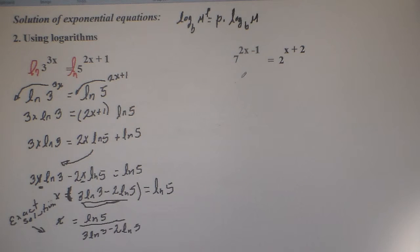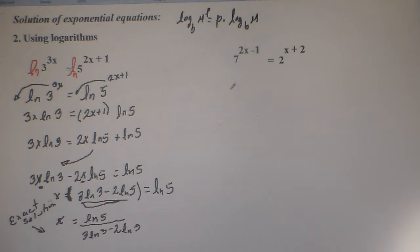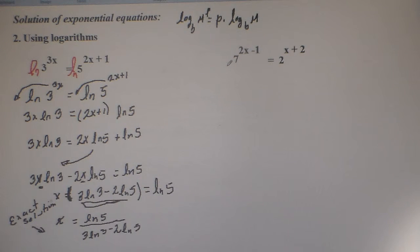Here I have another example: 7 to the power of 2x minus 1 equals 2 to the power of x plus 2. No matter what transformation you apply to this equation, you don't get the same basis. Then we are going to apply logarithms. As I said, you can apply either natural logarithms or common logarithms. In this case, I will apply common logarithms.